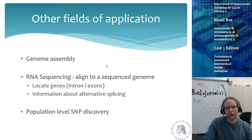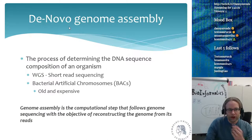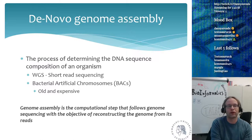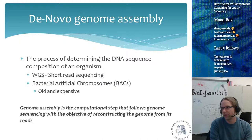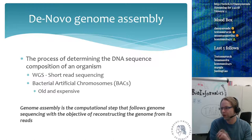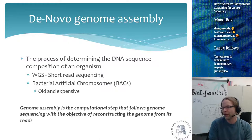De novo genome assembly is more or less an unsolved problem but has very good approaches. It is the process of determining the DNA sequence composition of an organism. One method is whole genome shotgun sequencing — short-read sequencing where we chop up the genome into very small pieces and sequence all fragments. The older method used during the Human Genome Project used bacterial artificial chromosomes — large 15,000 base pair pieces cloned into bacterial vectors and sequenced by Sanger sequencing.